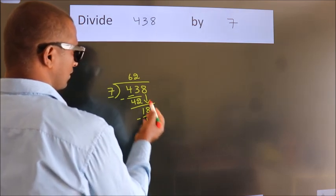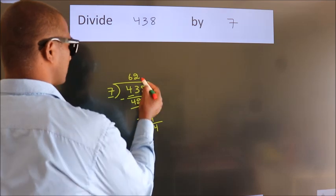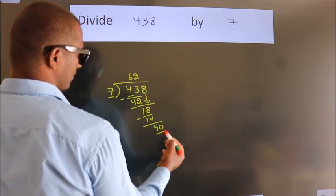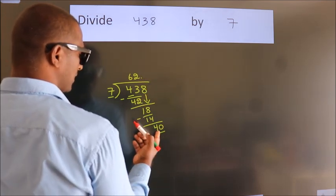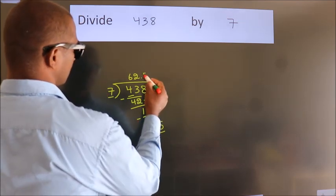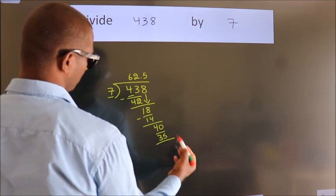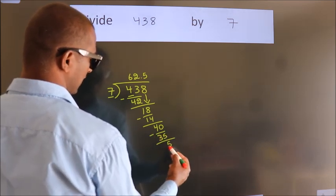After this, no more numbers to bring down. So what we do is, we put a dot, take 0, so 40. A number close to 40 in the 7 table is 7 times 5 equals 35. Now we subtract, we get 5.